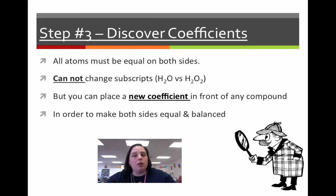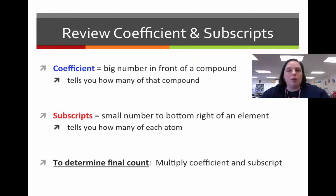But what you are allowed to do is you may place any coefficient you wish in front of any compound in order to make both sides equal. Review of coefficients and subscripts. Quick, quick, quick. Coefficients is the big number in front. Remember, we said that was a math word. Subscripts is the small number that goes to the bottom and the right. It tells you how many atoms you have of that compound.